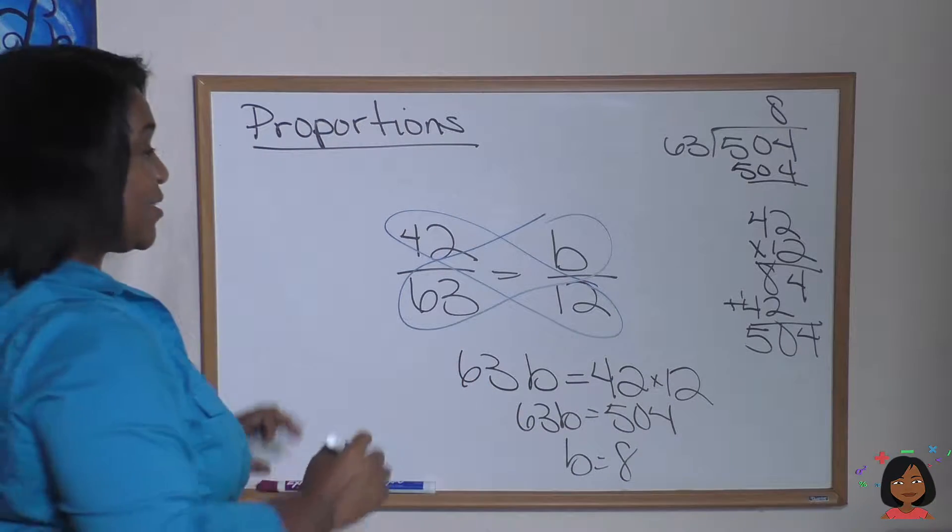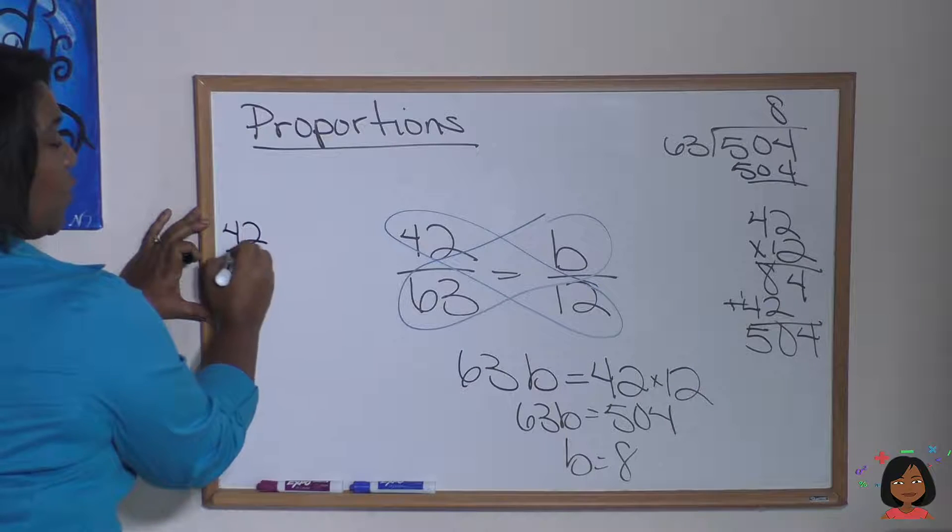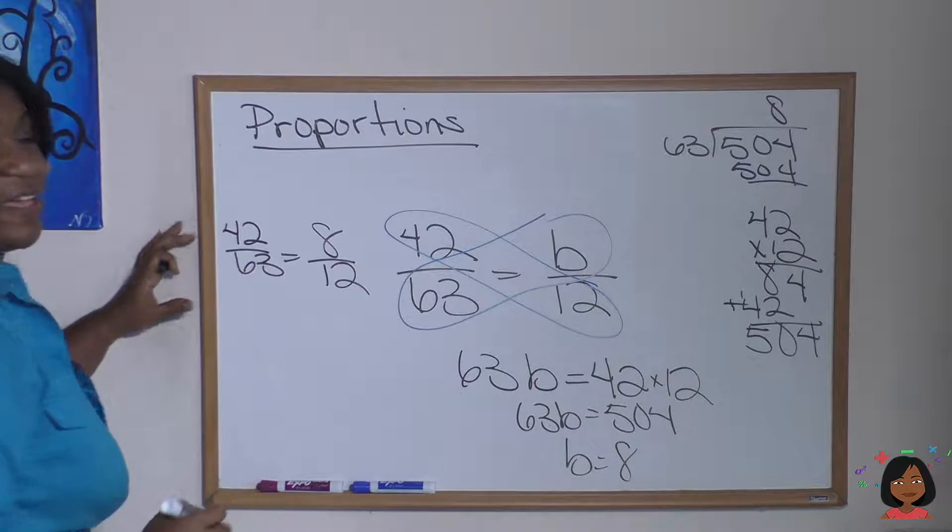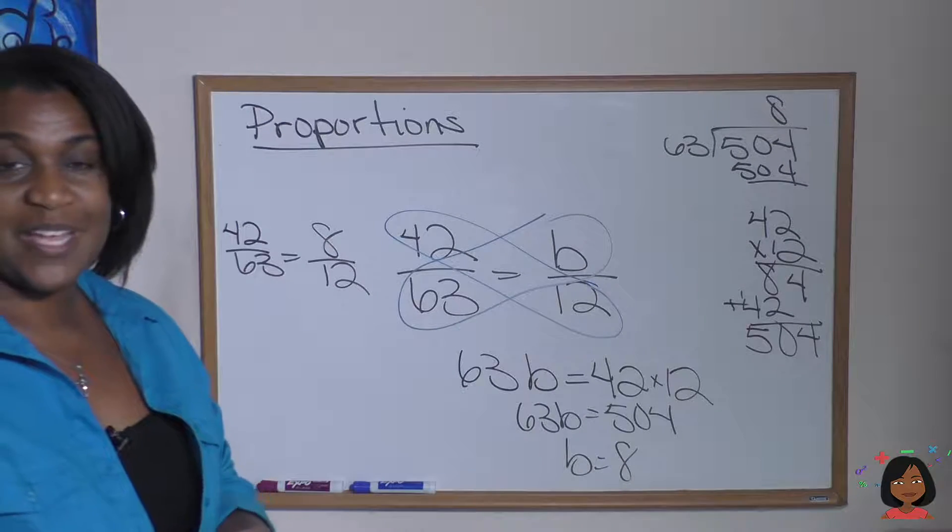So b equals eight. So the correct answer, I'm going to write it over here so you can see it. 42 over 63 equals eight over 12. They are equal. Let's try another one.